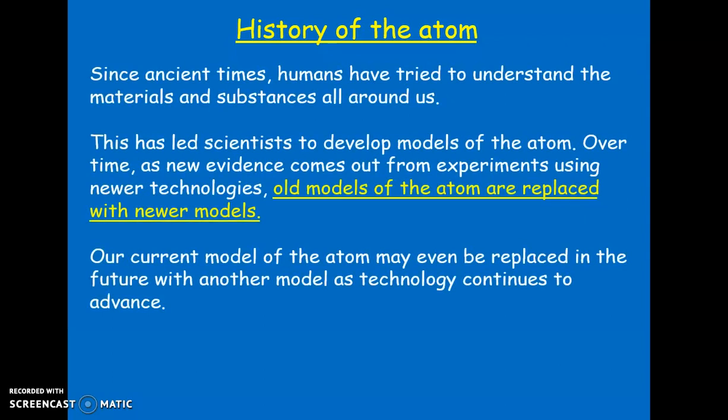So models are constantly changing. The history of the atom went through similar changes of models. We've always had this idea of wanting to know what the stuff around us is made up of. We had really old historic models of the atom, and as new evidence and new technologies progressed, those models kept being refined — old ones thrown out, new ones to replace them.